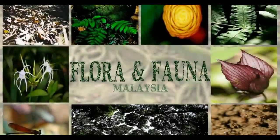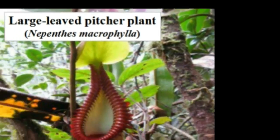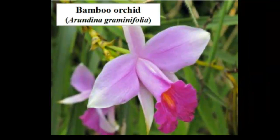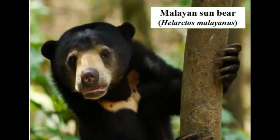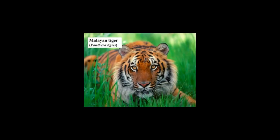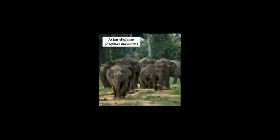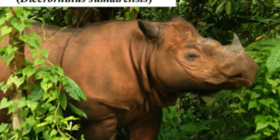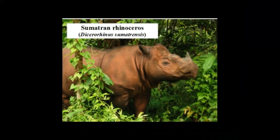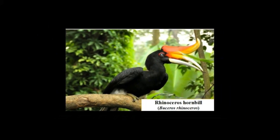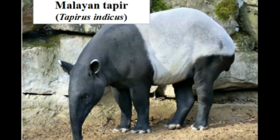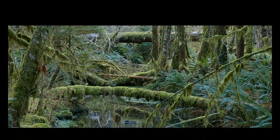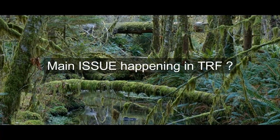Examples of the flora include the Large Leaf Pitcher Plant, Bamboo Orchid, and the Rafflesia. While examples of the fauna include the Malayan Sun Bear, the Malayan Tiger, Asian Elephant, Sumatran Rhinoceros, Rhinoceros Hornbill, Proboscis Monkey, and the Malayan Tapir.